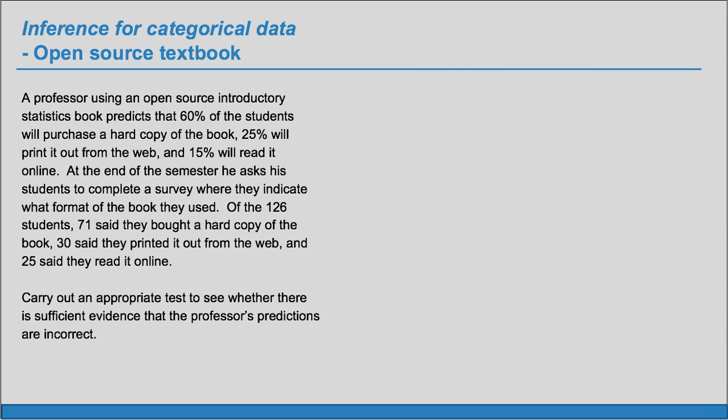A professor using an open-source introductory statistics book predicts that 60% of the students will purchase a hard copy of the book, 25% will print it out from the web, and 15% will read it online. At the end of the semester, he asks his students to complete a survey where they indicate what format of the book they use. Of the 126 students, 71 said they bought a hard copy of the book, 30 said they printed it out from the web, and 25 said they read it online.